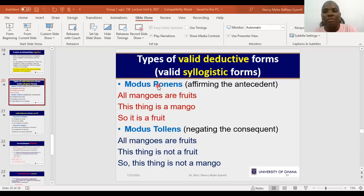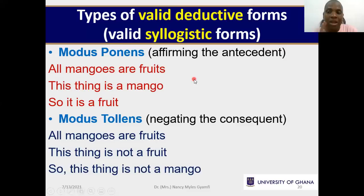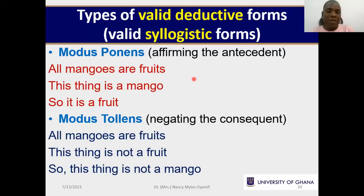The first part already touched on modus ponens and modus tollens. We'll focus a little on it now so you can get the points. We are dealing with the types of valid deductive syllogisms. Your test will cover four of them: modus ponens, modus tollens, hypothetical syllogism, and disjunctive syllogism. They are all valid. As we take them one by one, I'll show you the deviation of each — meaning if you try to do modus ponens but don't do it correctly, you could create a fallacy. That is a deviation, an error.